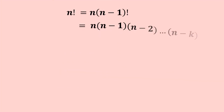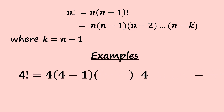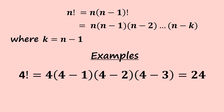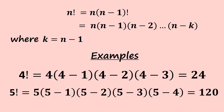Factorial equals n times (n minus one) factorial, which is n times (n minus one) down to n minus k where k equals n minus one. For example, four factorial is 4 × 3 × 2 × 1, which gives 24. Five factorial is 5 × 4 × 3 × 2 × 1 — we cannot include five minus five because that gives zero and would nullify our calculation — giving us 120.